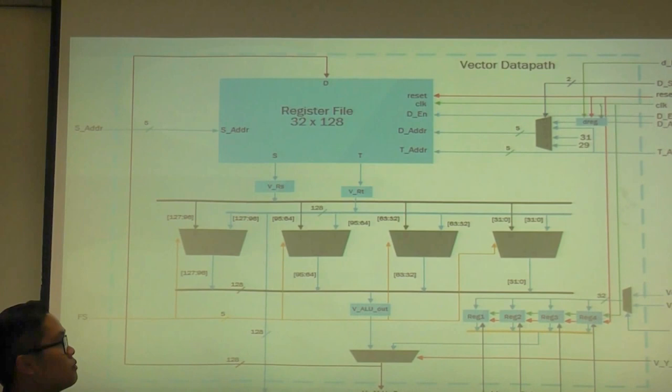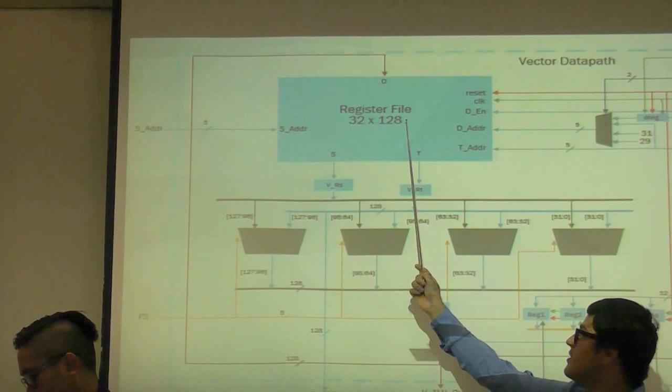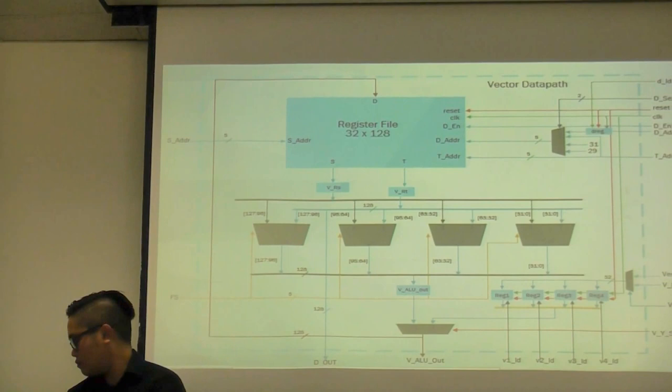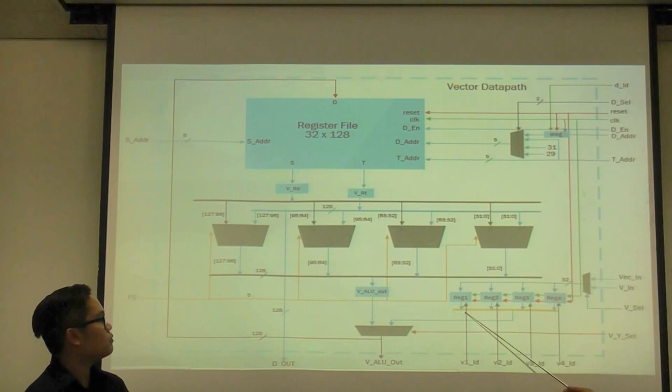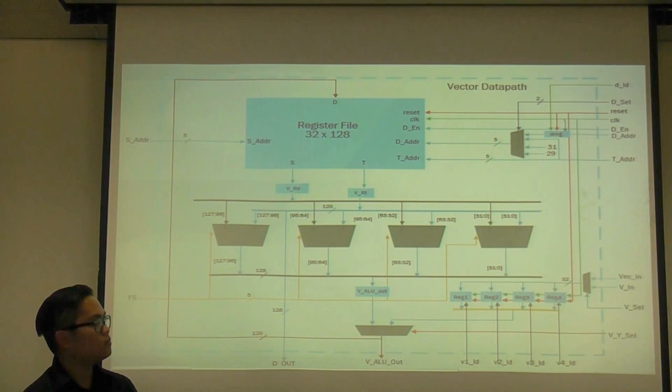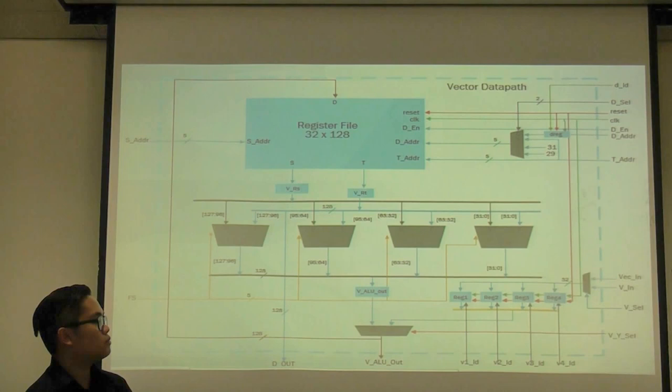This is our vector data path. The register file is 32 by 128 bits. Each of the four ALUs performs operations on 32 bits. We also have four registers here, which are used to load registers with an immediate value or a value from memory. These are just buffer registers — just for vector load and vector load immediate.